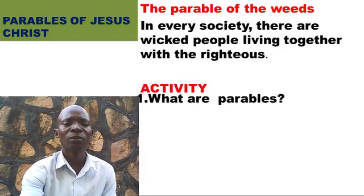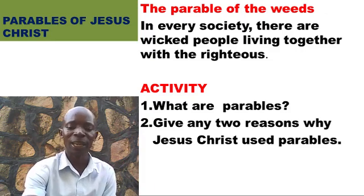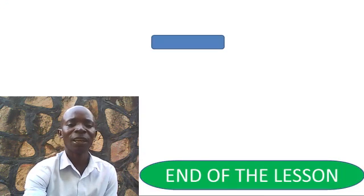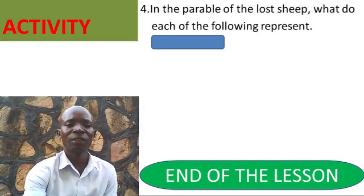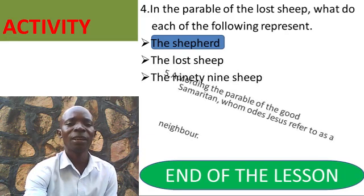Those are some of the parables I selected; there are very many others. There is an activity for you to answer — the answers will come from what I have explained. Look at the shepherd: what does it mean? The lost sheep stands for the sinners, the shepherd stands for the preacher of the word of God, and the 99 sheep stand for the righteous ones. Boys and girls, thank you for listening. This marks the end of our lesson. May the almighty God bless you.